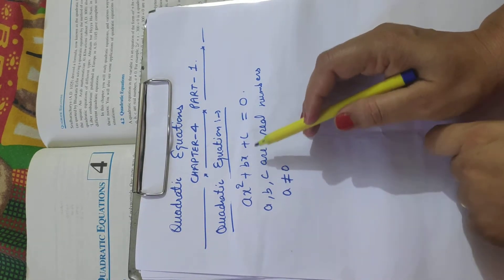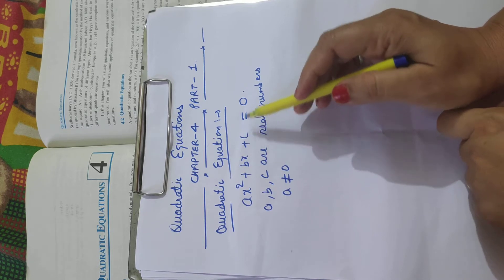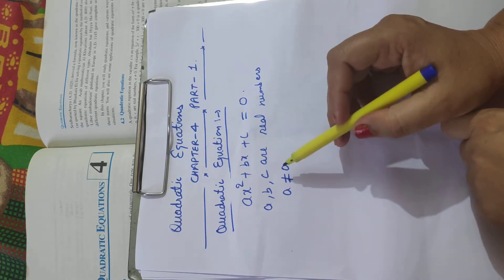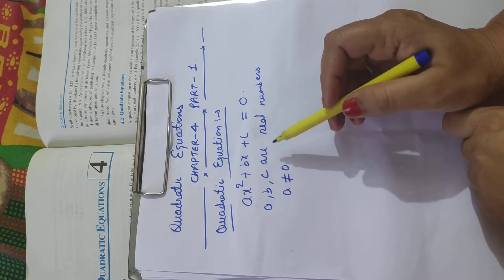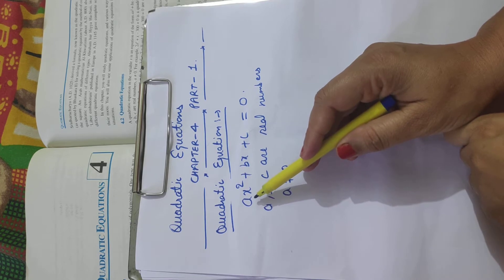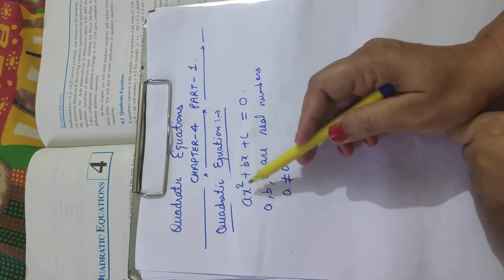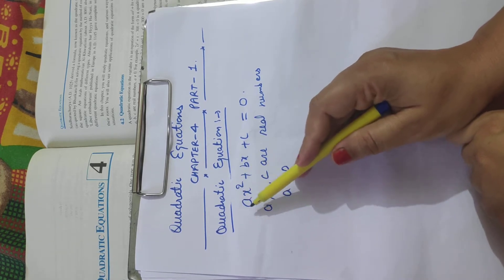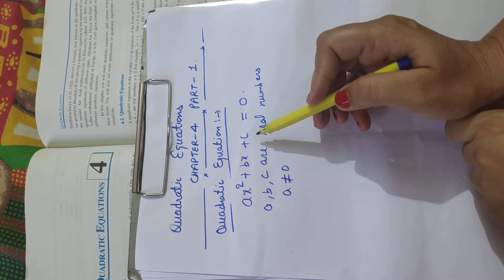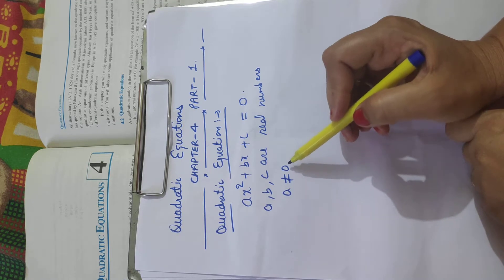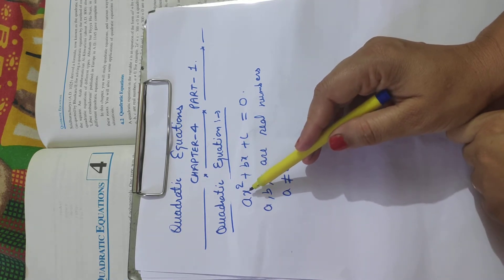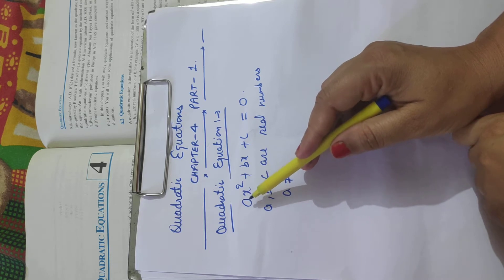ax squared plus bx plus c equals 0 is the general form of the quadratic equation, where a, b, c are real numbers — they may be rational or irrational — but a is not equal to 0. Because if a equals 0, that means the ax squared term becomes 0, and then it is not a quadratic equation anymore; it becomes a linear equation. That is why a is not equal to 0: the coefficient of the highest degree term must be non-zero.